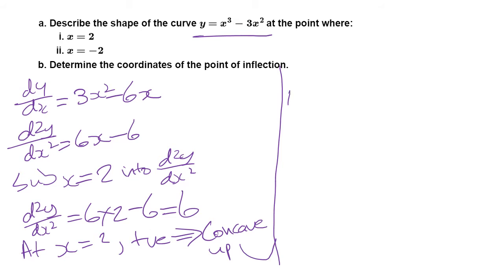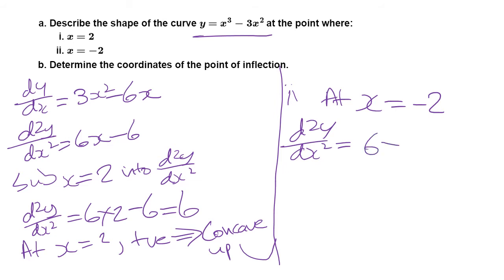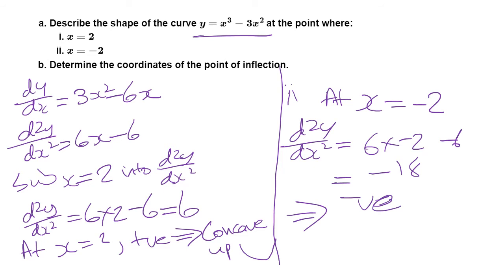Now let's work on part 2: what about at x = −2? You substitute into the second derivative: 6(−2) − 6 = −12 − 6 = −18. It's a negative number. Thinking back at the summary table, a negative second derivative means the curve is concaving down. So at x = −2, the shape of the curve would be concaving down.